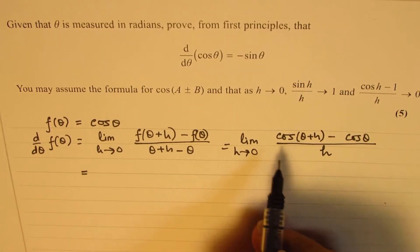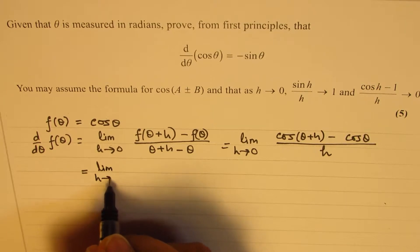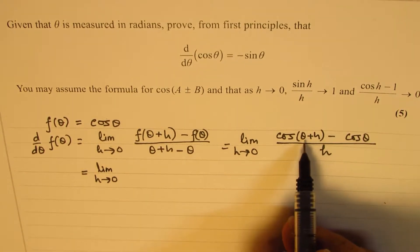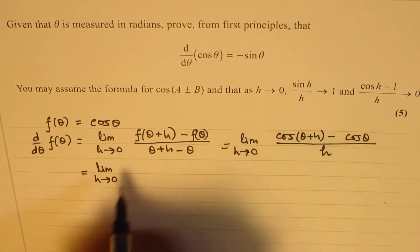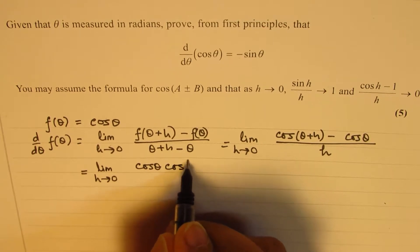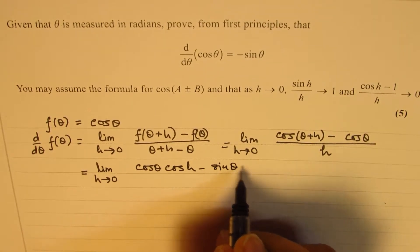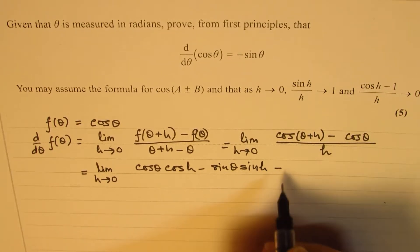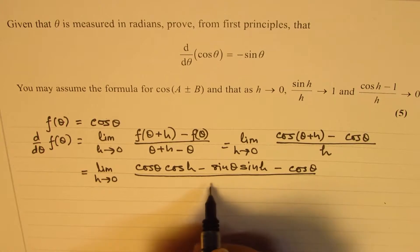Now we can apply the cos(a + b) formula here, which is cos a cos b minus sin a sin b. So we write this as: limit h approaches 0 of [cos θ cos h minus sin θ sin h minus cos θ], all divided by h.